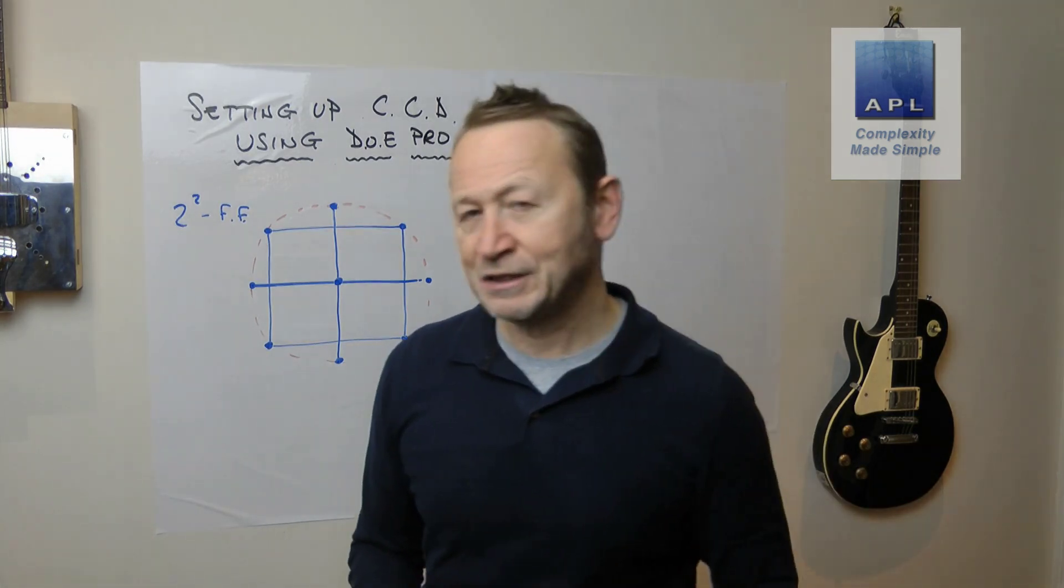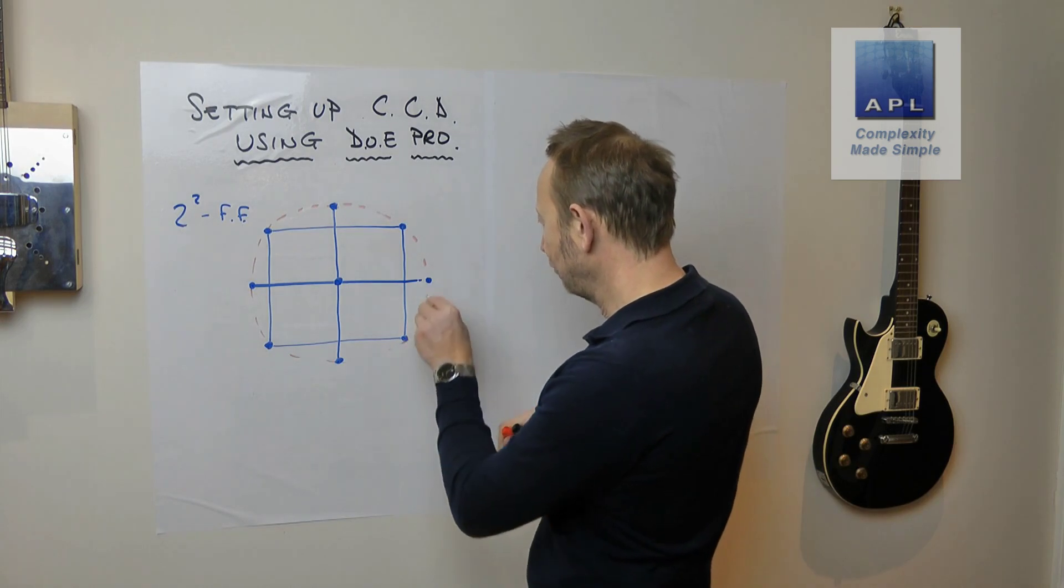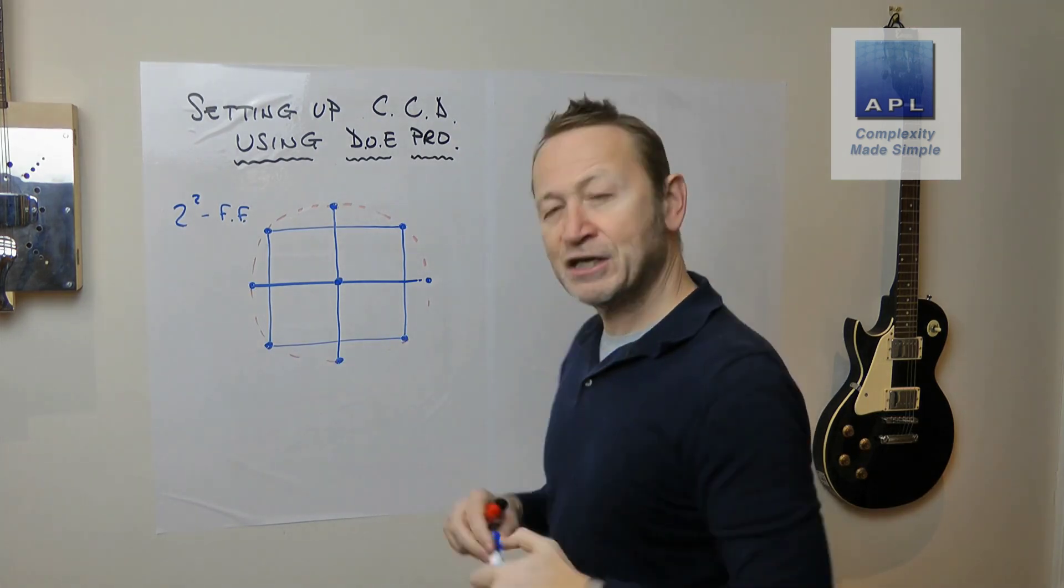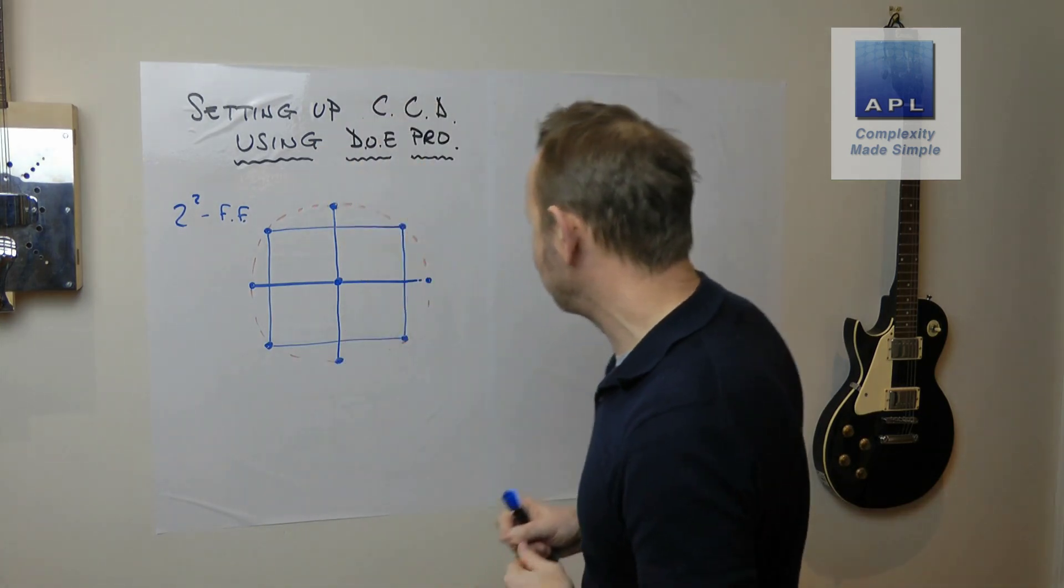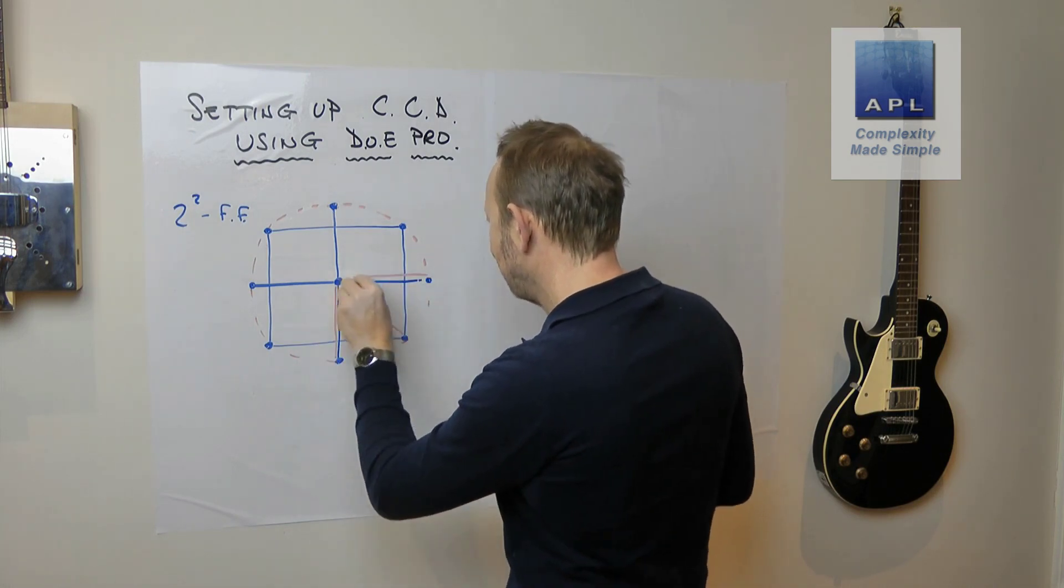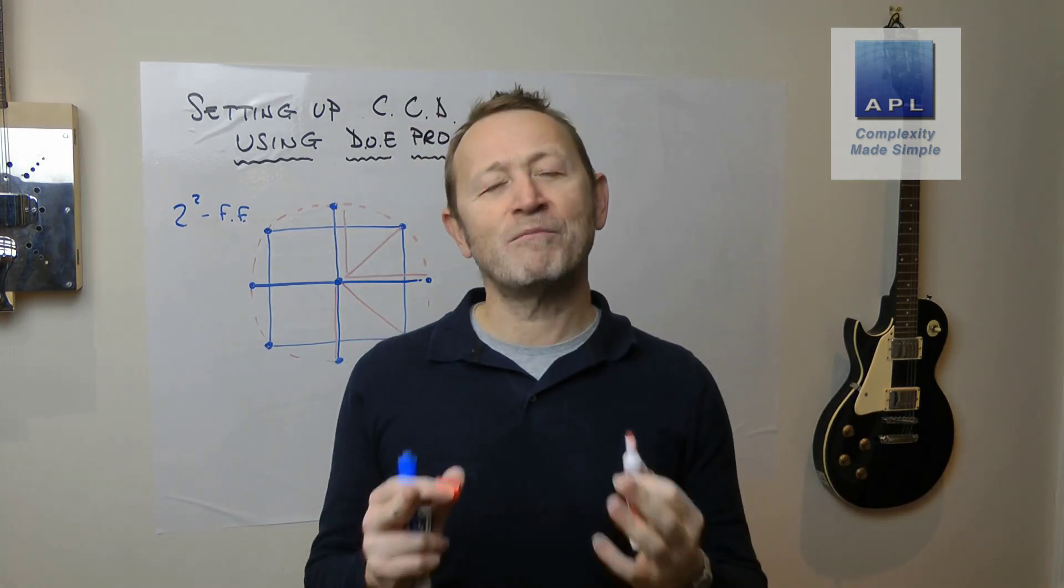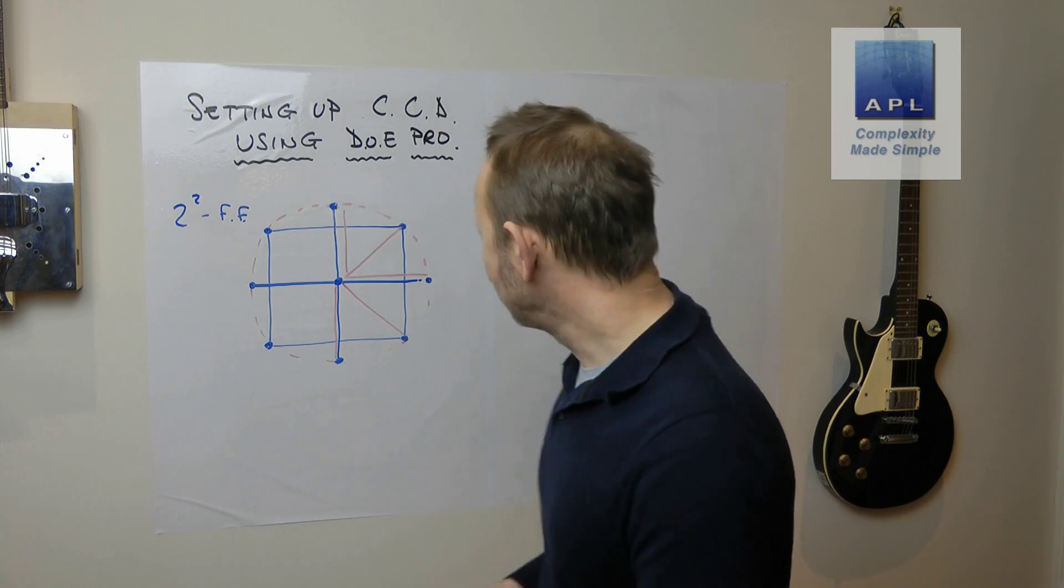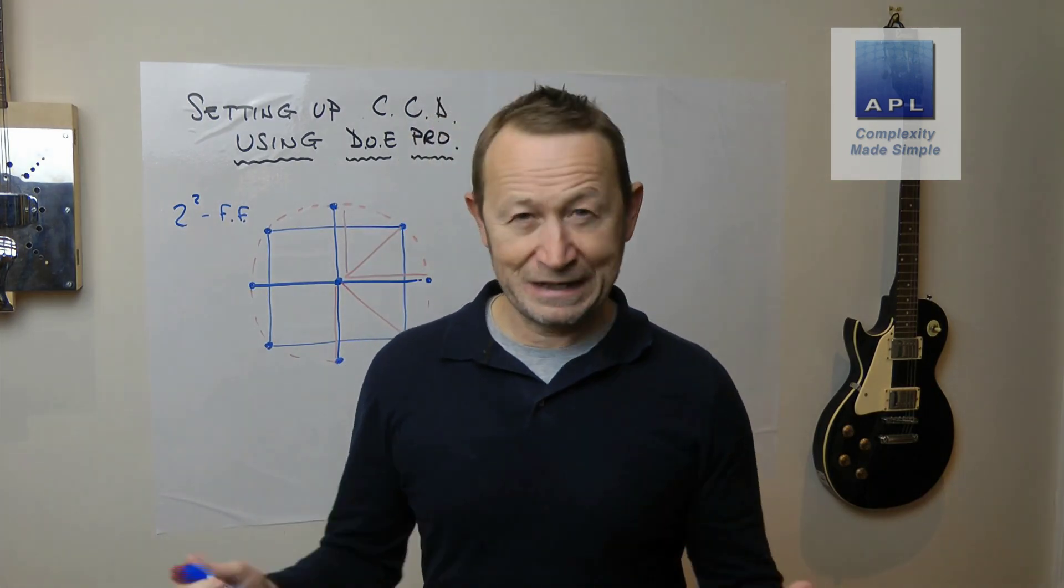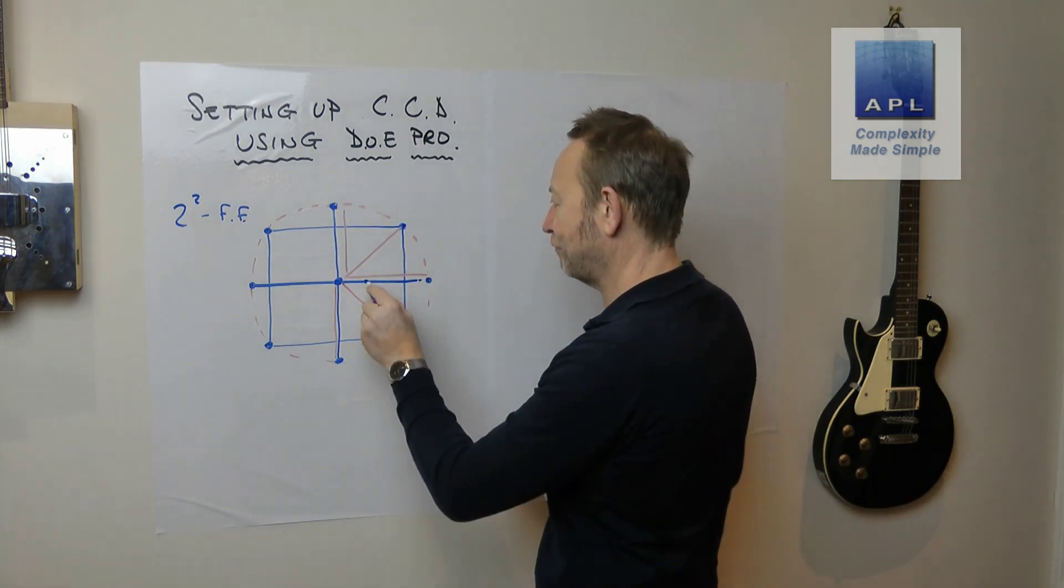Now why 1.63? Well, 1.63 takes you to the edge of the sphere, and what we've got here is all of these points all touch the surface of the sphere. Now why is that a good property? This is what mathematicians want you to do. Why is that a good property? Well because look, that distance and that distance and that and that and that - they are all equidistant from the middle. And what that means, because they are all equidistant, they all have an equal effect on the error in the model.